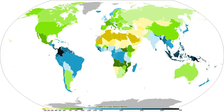The quantitative precipitation forecast (QPF) is the expected amount of liquid precipitation accumulated over a specified time period over a specified area. A QPF will be specified when a measurable precipitation type reaching a minimum threshold is forecast for any hour during a QPF valid period. Precipitation forecasts tend to be bound by synoptic hours such as 0000, 0600, 1200, and 1800 GMT. Terrain is considered in QPFs by use of topography or based upon climatological precipitation patterns from observations with fine detail.